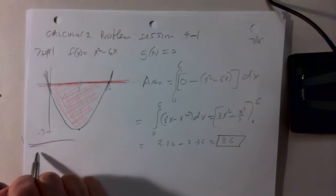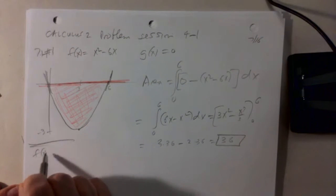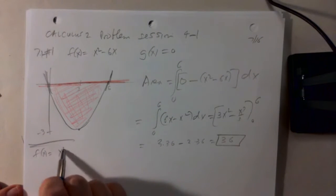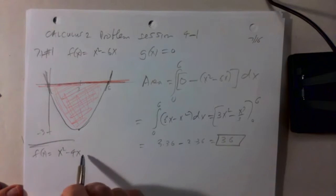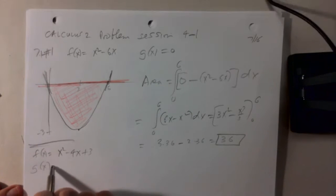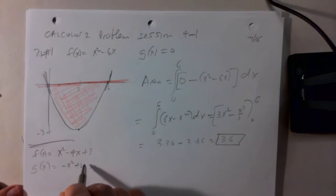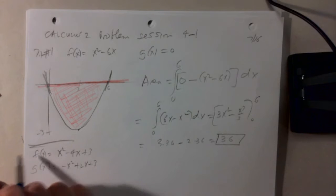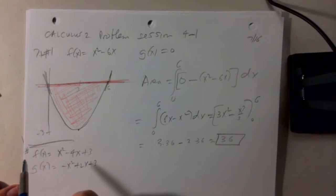So f of x is x squared minus 4x plus 3, and g of x is minus x squared plus 2x plus 3. Is that correct? Yeah. Which number is this in your book? Number 3.